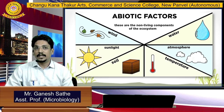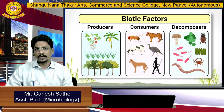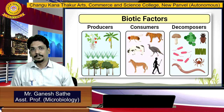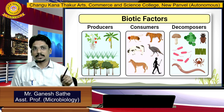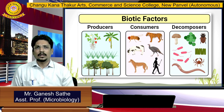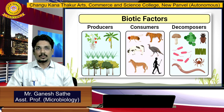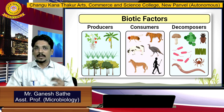Now coming to the biotic factors. In biotic factors there are three types: producers, consumers, and decomposers. We have plants — plants are photo-autotrophic, meaning they can fix atmospheric carbon dioxide into six-carbon-containing glucose. They can also convert light energy into chemical energy. So plants are primary producers.